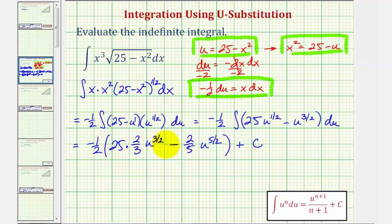Now let's go ahead and distribute. Notice in this first product, the twos will simplify out, leaving us with negative 25-thirds, and then u to the three-halves. Since u is equal to 25 minus x squared, would be the quantity 25 minus x squared to the three-halves.